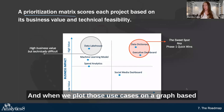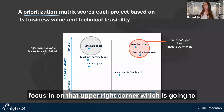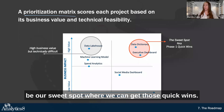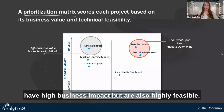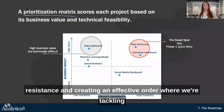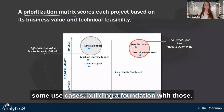When we plot those use cases on a graph based on those two scales, we can focus in on that upper right corner, which is going to be our sweet spot where we can get those quick wins. Those are going to be our use cases that will have high business impact but are also highly feasible. That way, we're choosing the path of least resistance and creating an effective order where we're tackling some use cases and building a foundation with those.